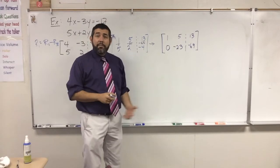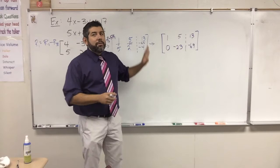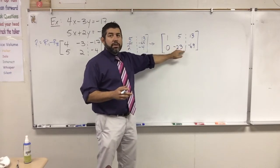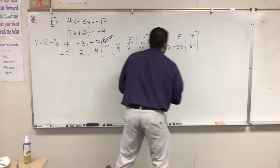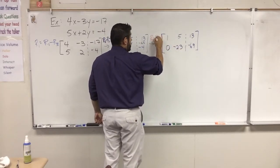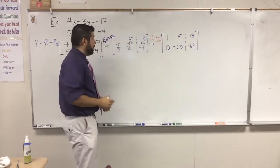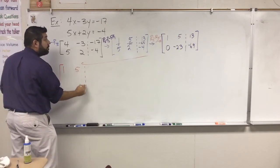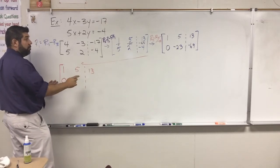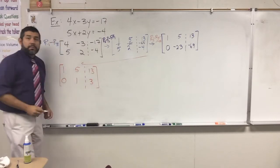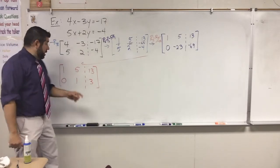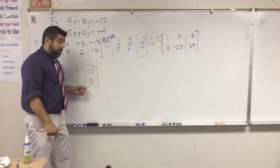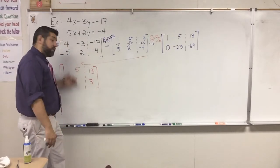Now my goal is to make the leading entry of row 2 a 1. Almost always you just divide that entire row by whatever number is there — in this case negative 23. So I replace row 2 with R2 divided by negative 23. Row 1 stays: 1, 5, 13. Row 2 becomes: 0, 1, 3. Almost done — now I just need to eliminate the 5 in row 1.